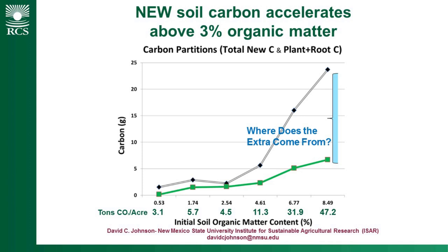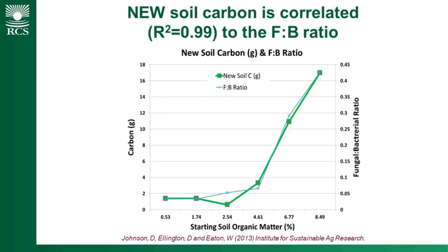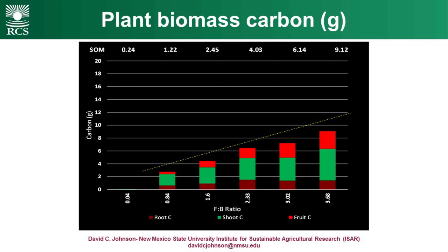In some of the trials he's done, he looked at new carbon in the soil. The green line across the bottom is the total carbon produced by roots and all the above-ground and below-ground parts of the plant. And yet he found that there's a whole lot of new carbon in those soils. The question is: where did that new carbon come from? When he analysed it, he found that it was entirely related to the fungal-to-bacteria ratio — all of that new carbon was a function of the amount of fungi in the soil. And almost all of our soils are deficient in fungi, so if we want to add carbon or improve soil health, fungi is what we've got to add significantly.